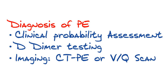Let's talk about the diagnosis of PE — it's generally a step-by-step approach. First, you need to do a clinical probability assessment to understand the likelihood that this patient actually has a PE. Second, consider whether this patient needs a D-dimer test. And finally, determine what imaging to obtain, whether it's a CT PE study or a VQ scan.